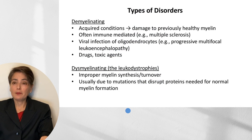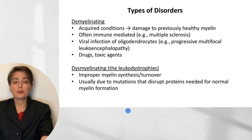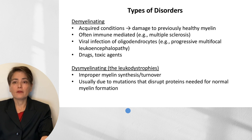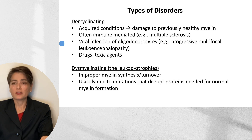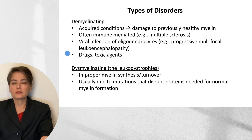There are two types of disorders when we think about myelin. We have our demyelinating disorders, which are acquired conditions that lead to damage to previously healthy myelin. These disorders are often immune-related — for example, multiple sclerosis — although we can also see demyelination due to viral infection of oligodendrocytes, for example in progressive multifocal leukoencephalopathy, as well as with drugs and toxic agents.